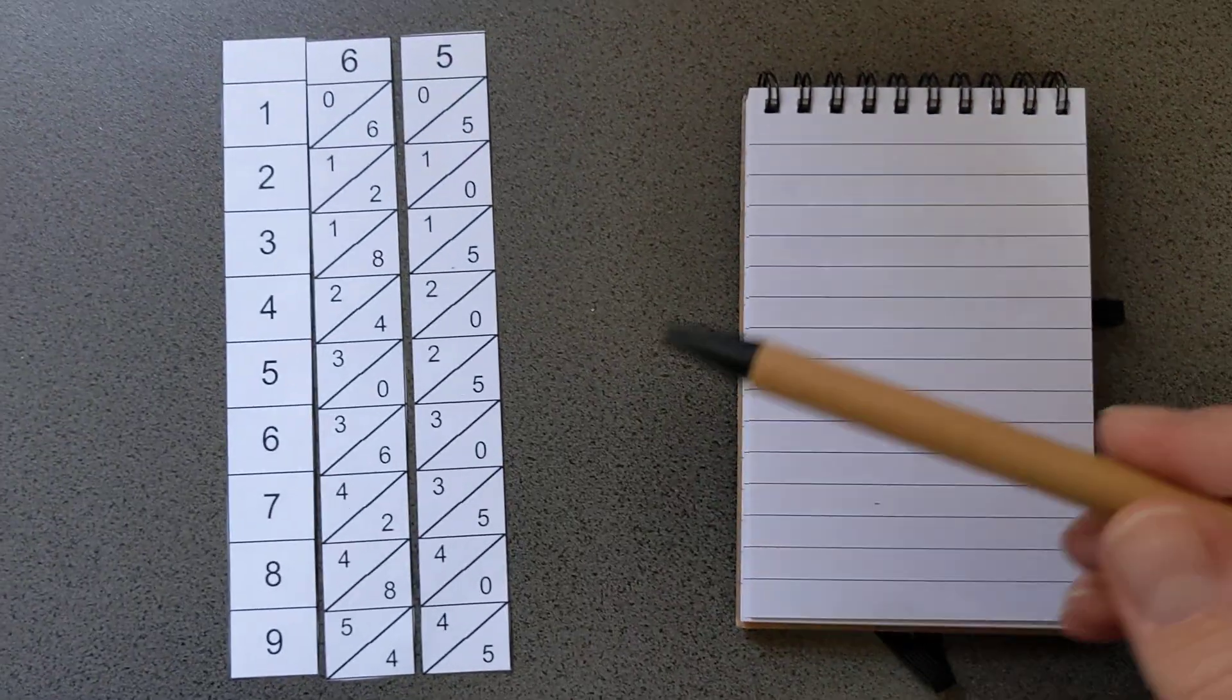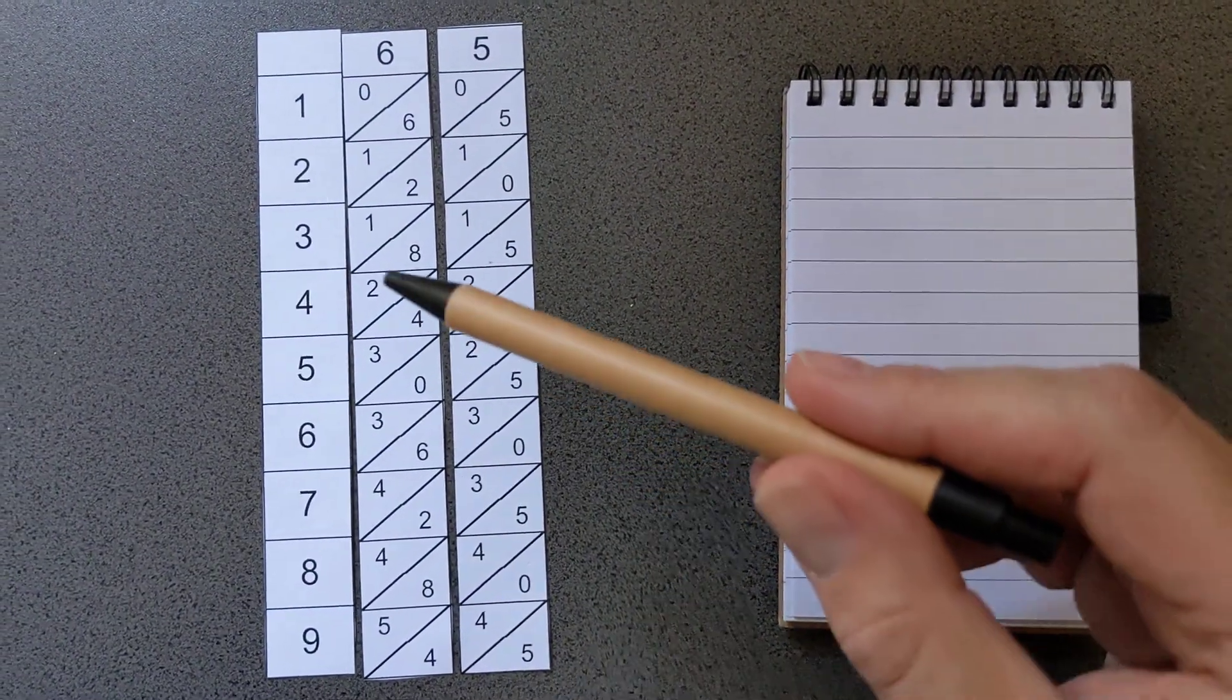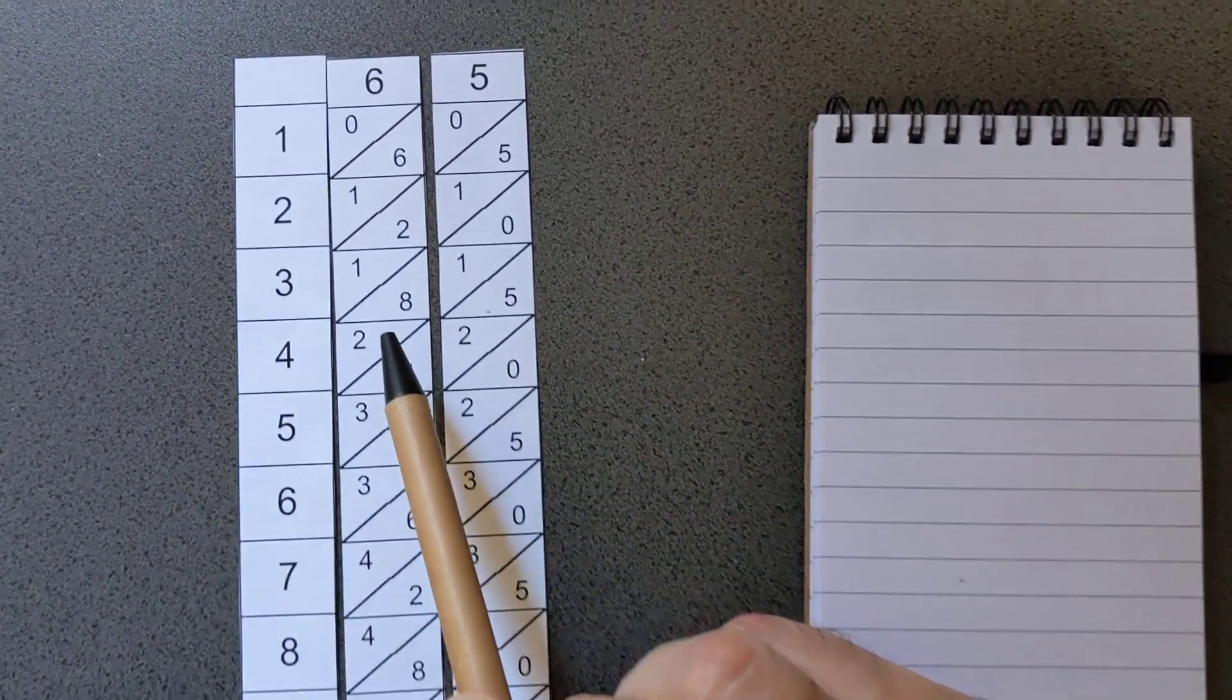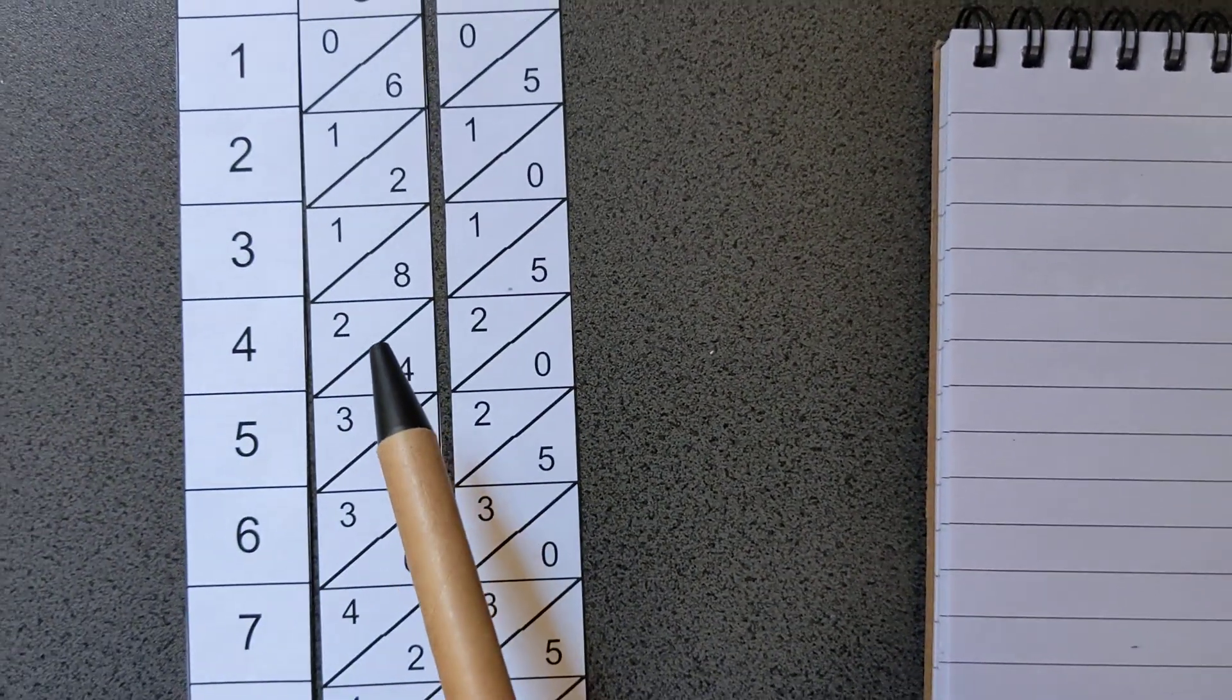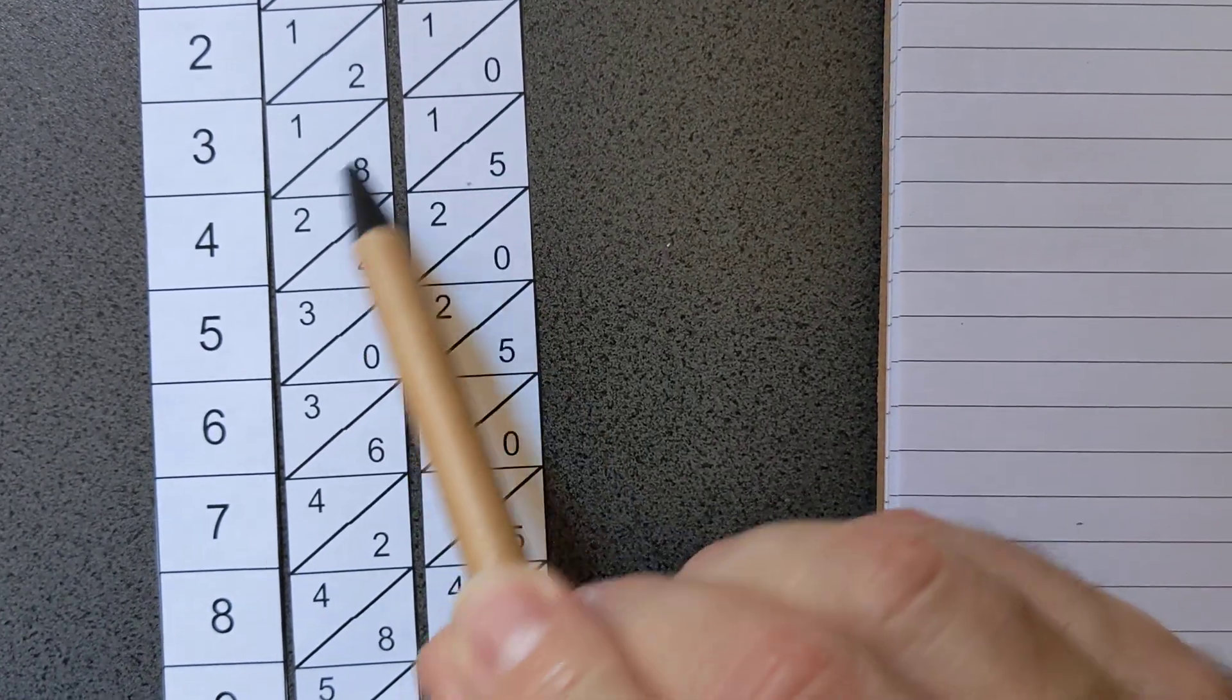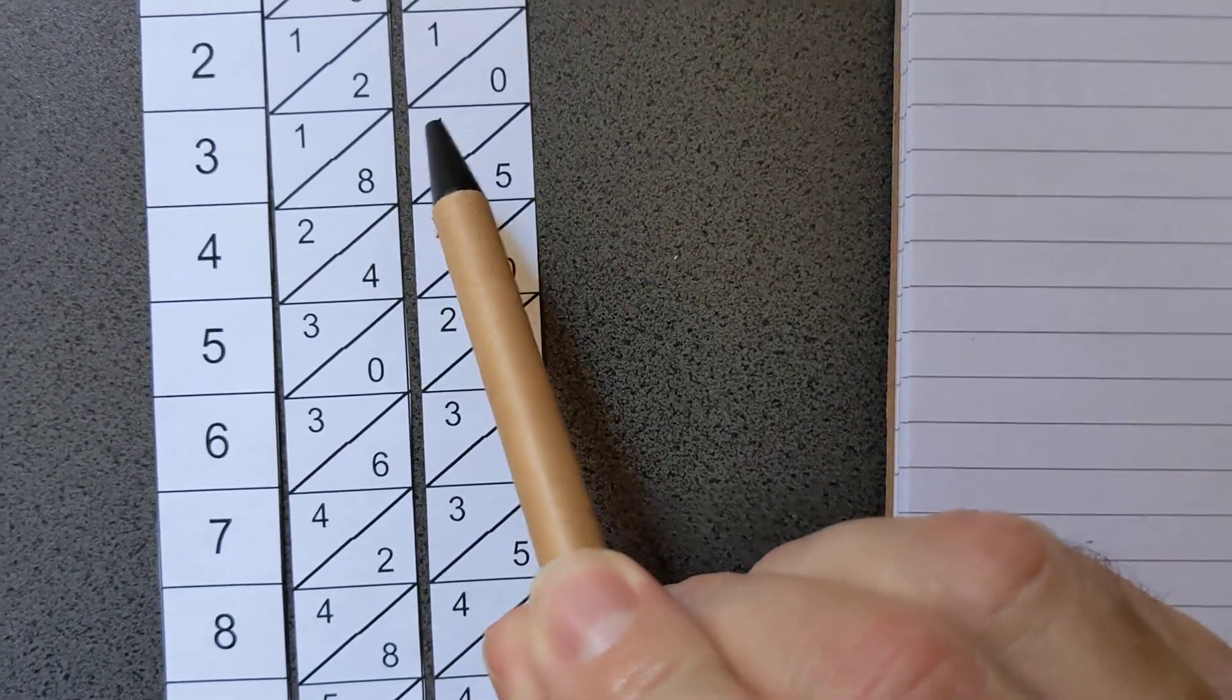So if I wanted to do, for example, 65 times 3, what I would do is I would look at the 3 row across here, and I would look at the digits that were in that row. So I've got 1, and then I would add the numbers that are separated diagonally.